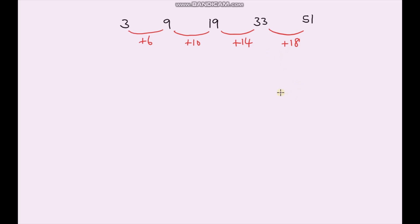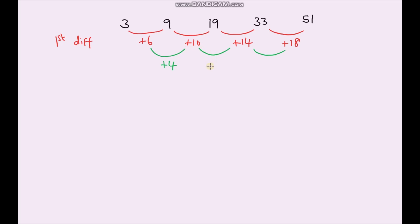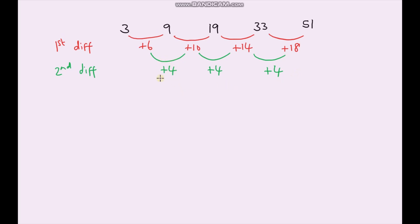Now we're going to look at the second difference — you can think of it as the difference between the differences. The second difference between here and here is +4; I'm adding on 4 more than before. The second difference here is also +4, and here also +4. So the second difference between terms is +4. Whenever we have a sequence where the second difference is the same, it will always be a quadratic sequence which starts with n squared.